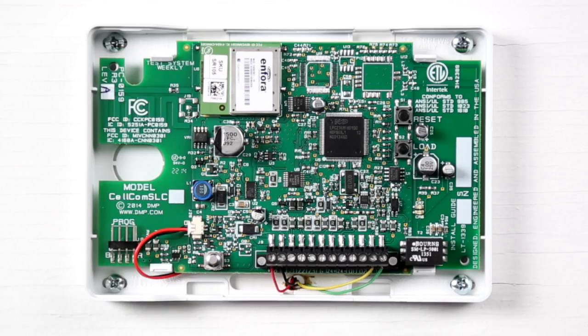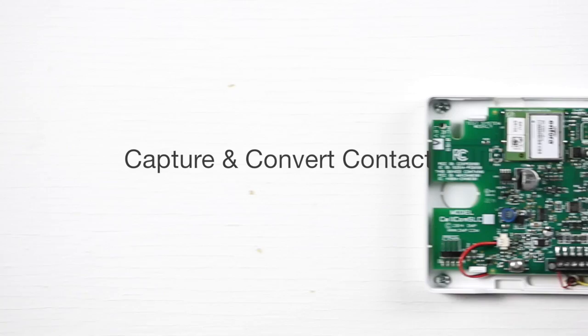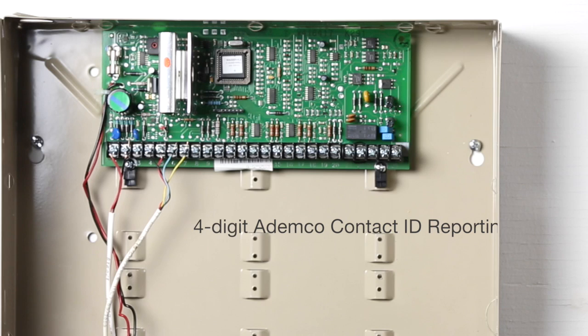Cellcom SL universal cellular alarm communicators capture and convert contact ID dialer signals to DMP format for central station reporting over a CDMA cellular network. In order for the Cellcom SL to capture and convert contact ID on a host panel, the host panel must be programmed for 4-digit ADEMCO contact ID reporting.